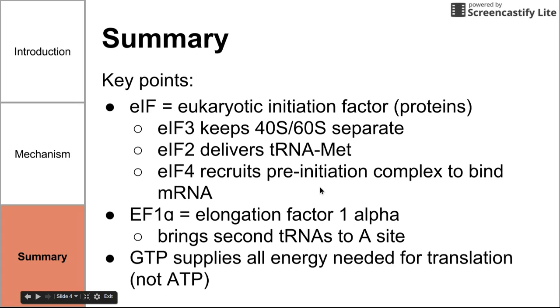Eukaryotic initiation factor 4 recruited the entire complex to the mRNA. Once ready for elongation to begin, elongation factor 1-alpha brought the second tRNA to the A-site and also brings all subsequent tRNAs to the A-site to continue growing the polypeptide chain.